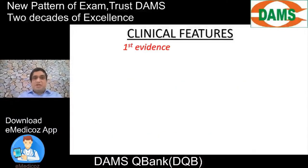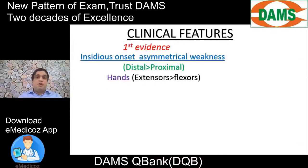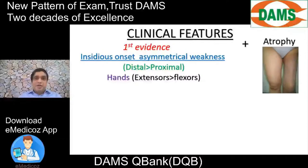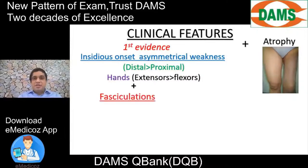Clinical features of ALS: the first evidence is always an insidious onset with asymmetrical weakness, more distal than proximal, reflecting corticospinal tract involvement. In the hands, extensors are more involved than flexors. A key sign of LMN palsy is wasting of the muscle — atrophy — where an atrophic limb shows significant muscle wasting compared to the contralateral limb.